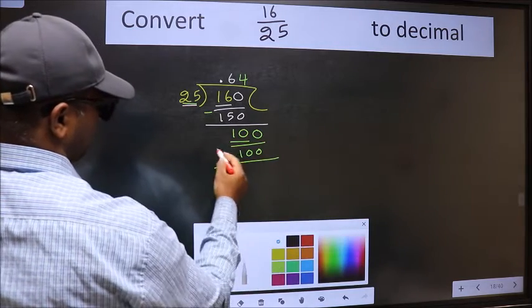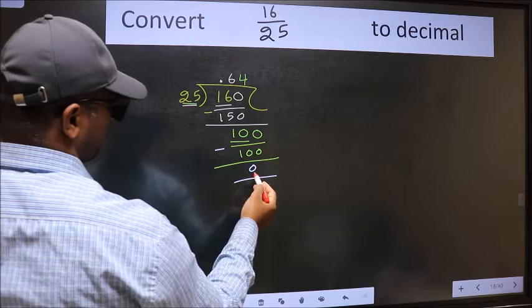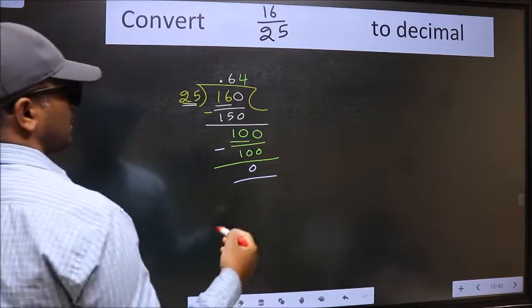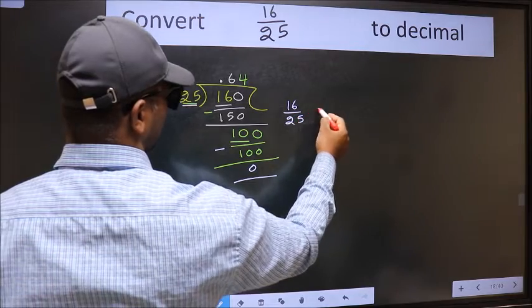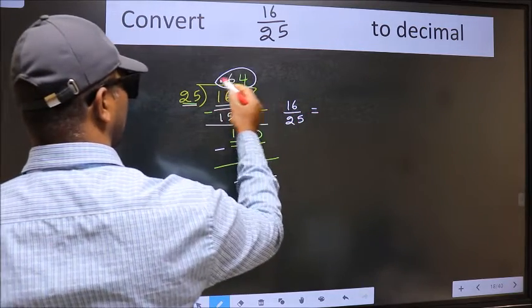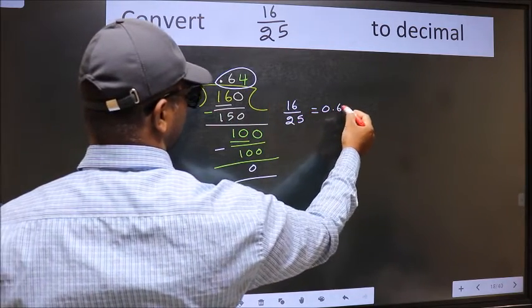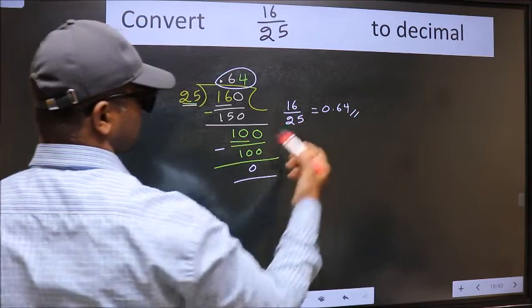Now we should subtract. We got 0. Therefore, the decimal of 16 by 25 is this one. 0.64 is our answer.